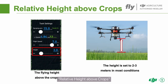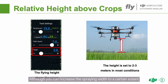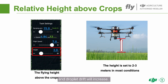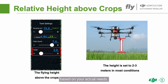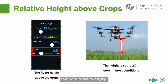Relative height above crops. This refers to the height from the crops to the radar and agri-drone. It determines the spraying width and the downward wind field. Although you can increase the spraying width to a certain extent by setting a higher flight height, the downward wind field of the droplets will decrease and droplet drift will increase. Therefore, a suitable flight height should be chosen for each model based on your actual needs. For T series agri-drones, a height of 2-3 meters is generally recommended. A higher flying height is allowed for spreading operations and crops prone to lodging.